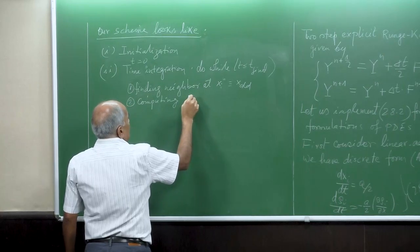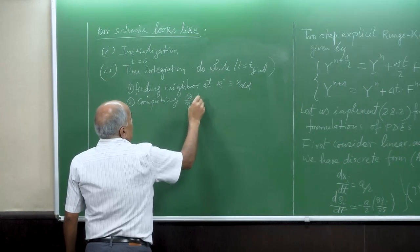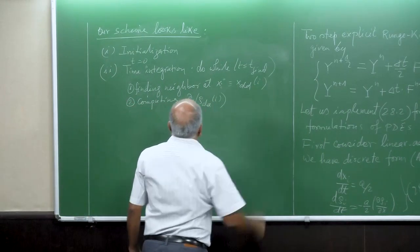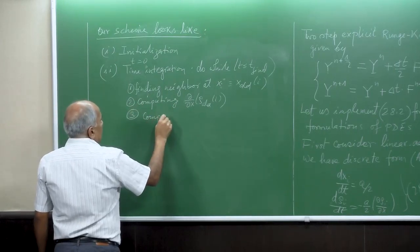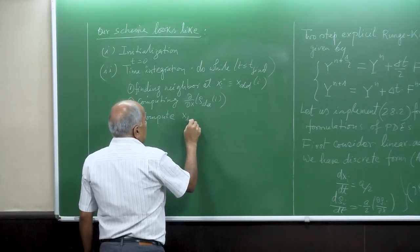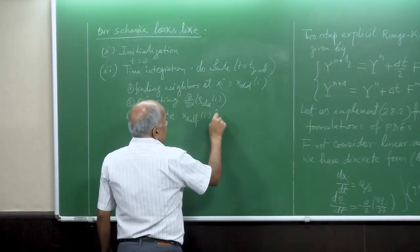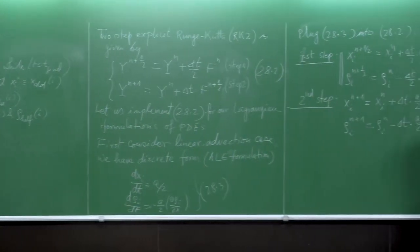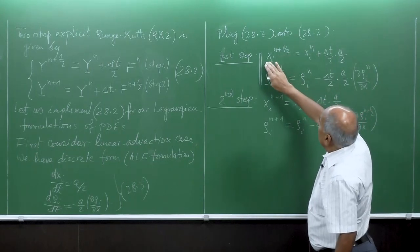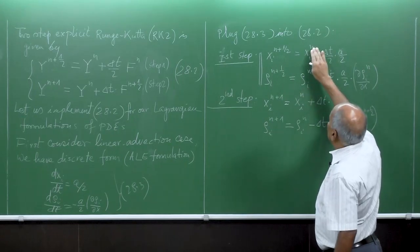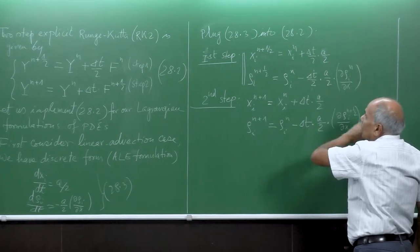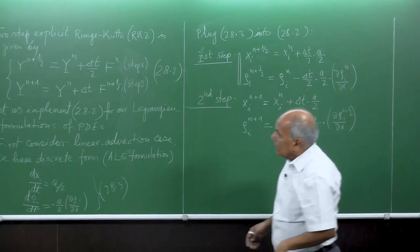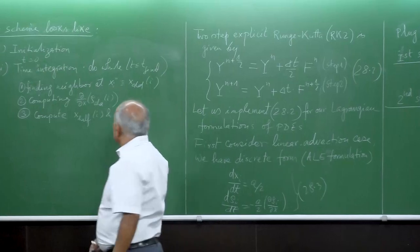Third step: compute del(rho)/del(x) of rho_old of i — here x_i is old. Then compute x_half of i and rho_half of i. Once we compute the derivative on the right-hand side, we write: x_half(i) = x_old(i) + (delta_t/2)*(a/2), and rho_half(i) = rho_old(i) - (delta_t/2)*(a/2) * (del rho_i / del x). Once we have the derivative, we plug it there. We finish the first part.